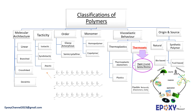Classification of polymers: polymers can be classified based on different factors. One of the most commonly seen factors is molecular architecture — here we have linear, branched, cross-linked, and dendritic polymers. The next classification can be based on tacticity, where polymers are divided into isotactic, syndiotactic, and atactic. Another classification is based on order, giving glassy amorphous and semi-crystalline polymers. Classification based on monomer: having more than one type of monomer changes the name from a homopolymer to a copolymer. The next classification is based on viscoelastic behavior, where we have thermoplastics and thermosets.